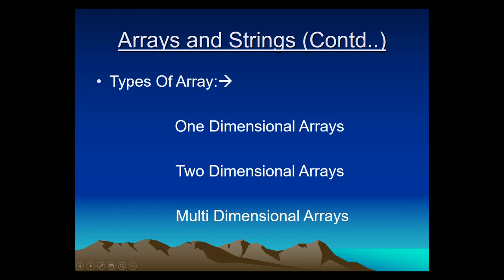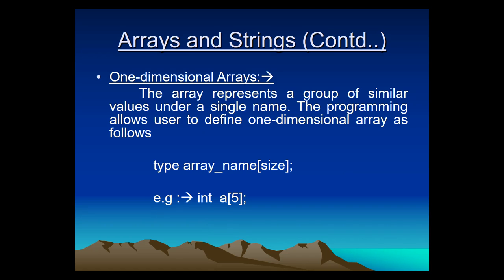Arrays are of different types. Mainly there are three different types: one dimensional array, two dimensional array, and multi dimensional array. Now, what is the definition of one dimensional array? We will also look at the syntax of one dimensional array and one example of one dimensional array.